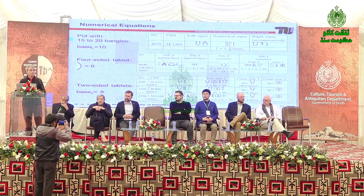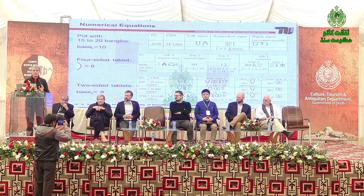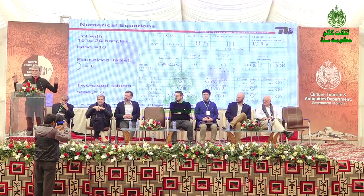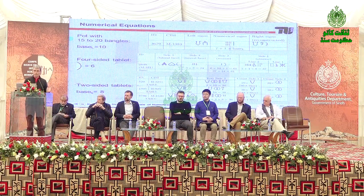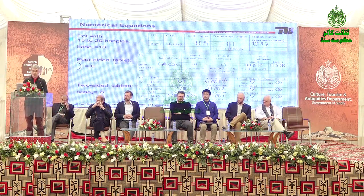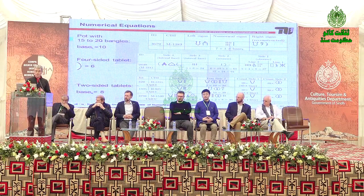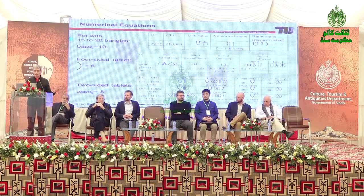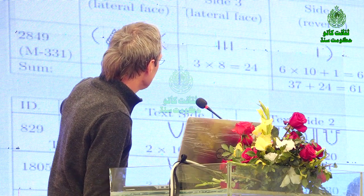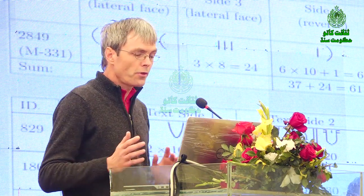When analyzing Indus writing, I discovered several sets of inscriptions representing what I call numerical equations — a kind of reference between the number represented in the text and the content. Either it is the number of reconstructed bangles in a pot, or it is given as a number because it is the sum of two other numbers on the same text. In a third case, you can see counting of two different things and how they are correlated.